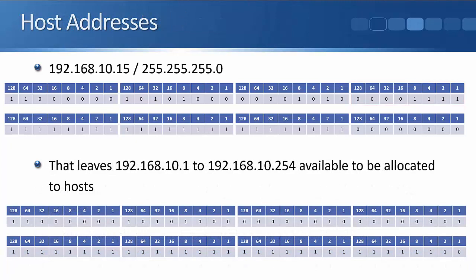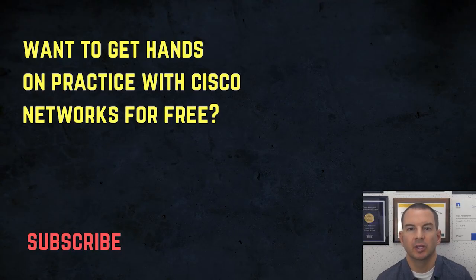That leaves 192.168.10.1 to 192.168.10.254 available to be allocated to hosts in our example. You can number different PCs and other hosts — whether Windows or Linux — from 192.168.10.1 all the way up to 192.168.10.254. They're all in the same subnet and whenever they send traffic to each other they can do so directly without going via their default gateway router.